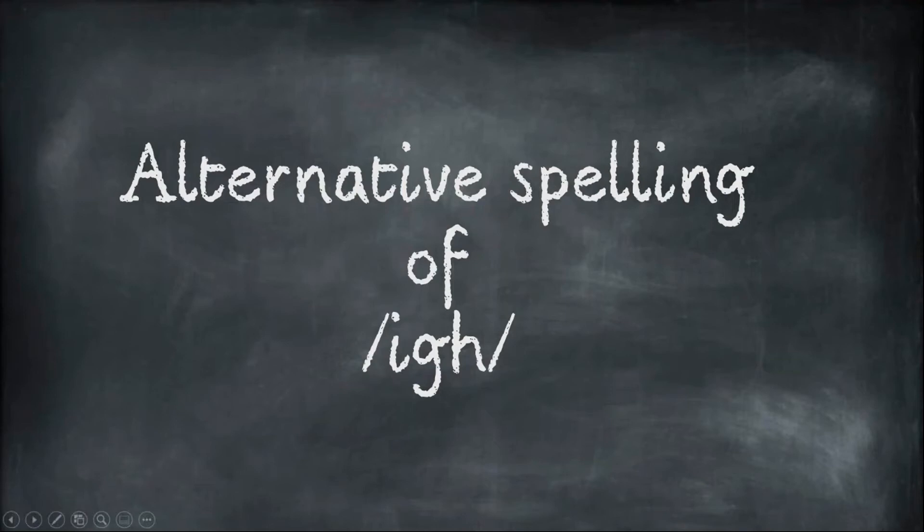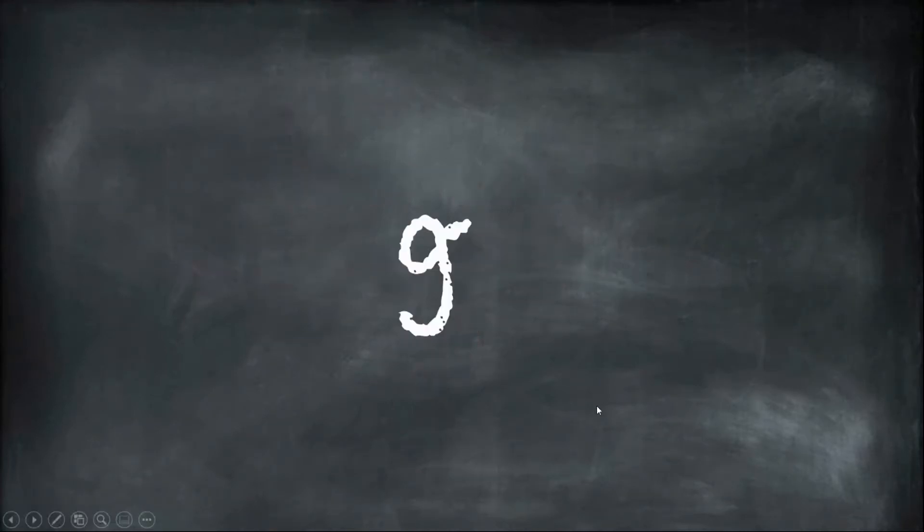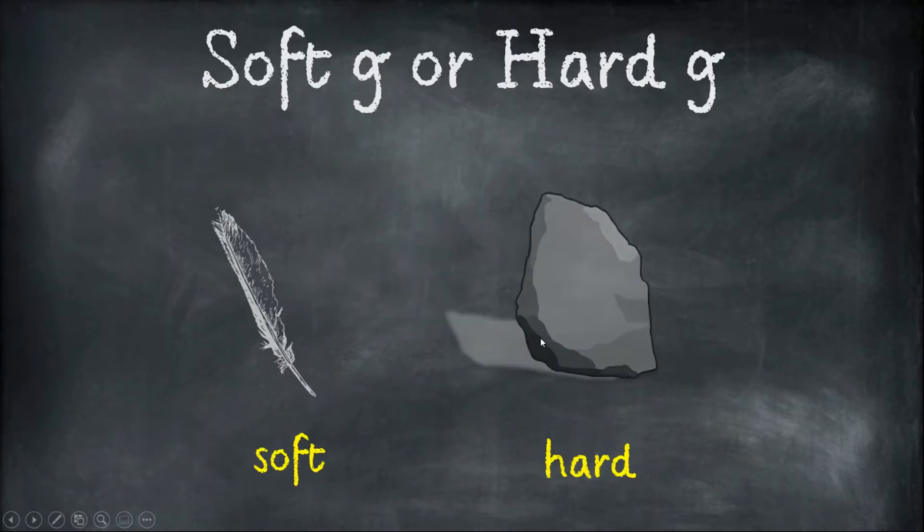Today we're looking at alternative ways to spell the I sound. We're revisiting the alternative pronunciation of the letter G. When we see the letter G, it can be pronounced in two different ways: the soft G which says J, or the hard G that says G.